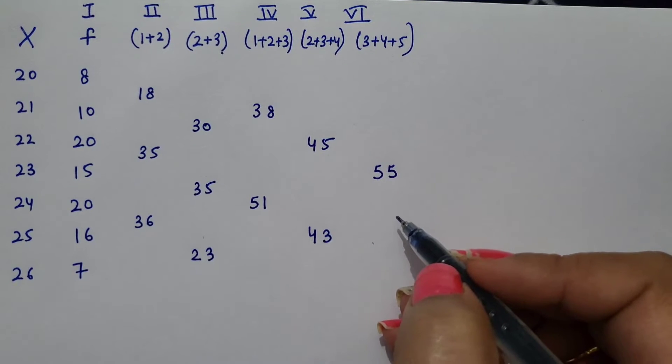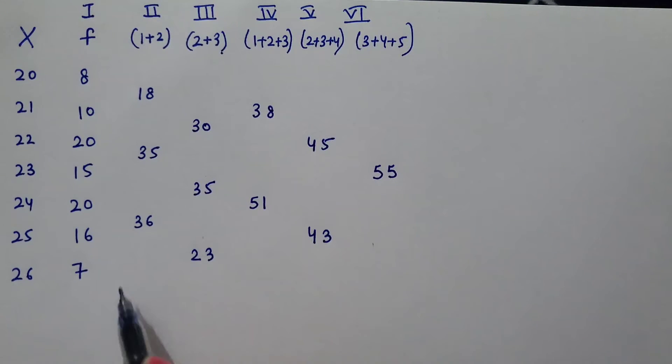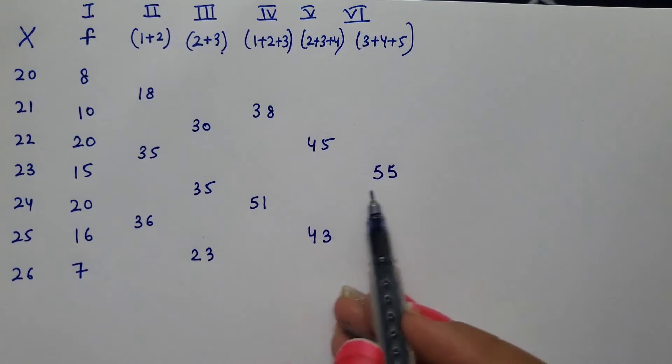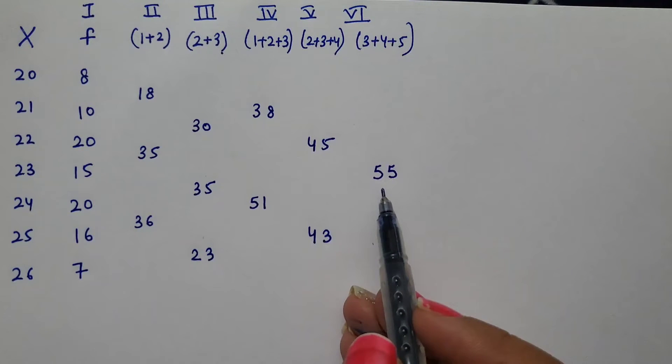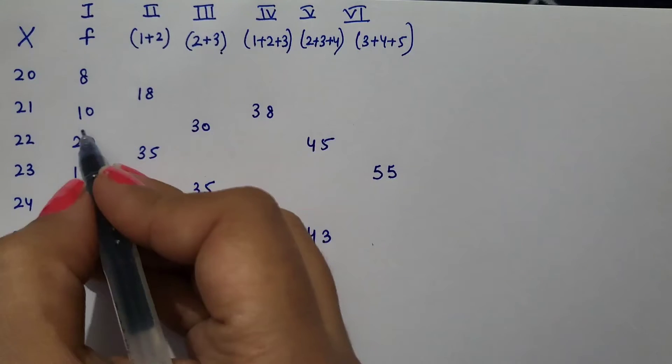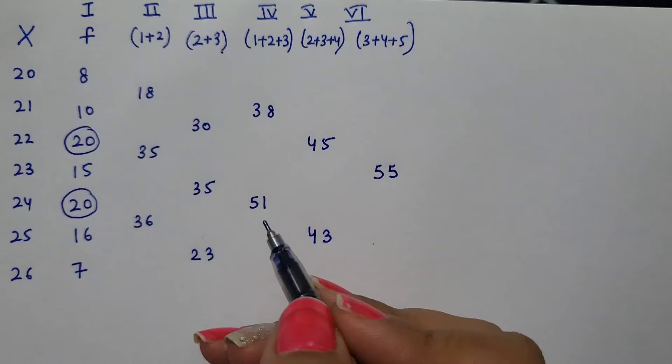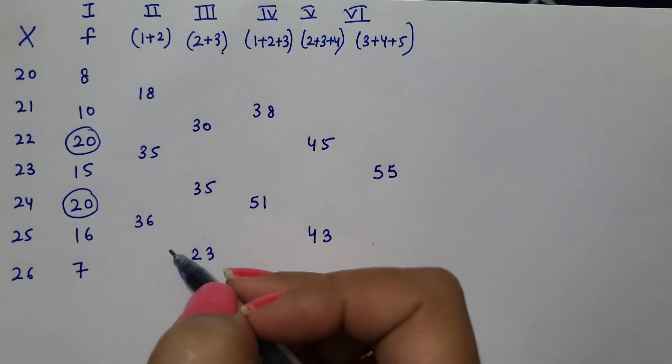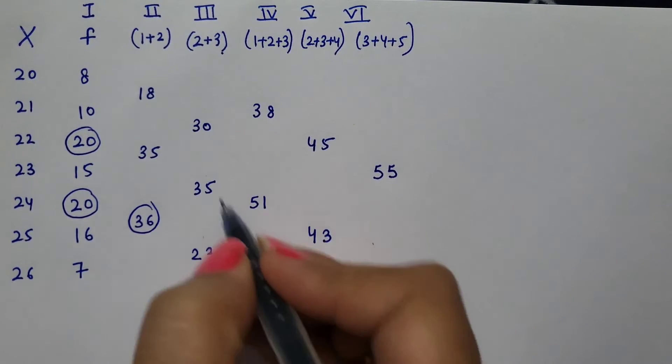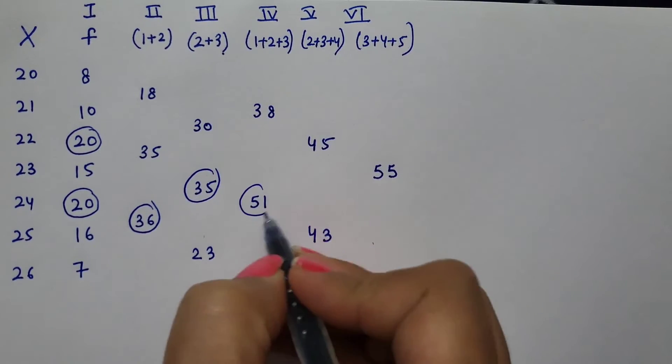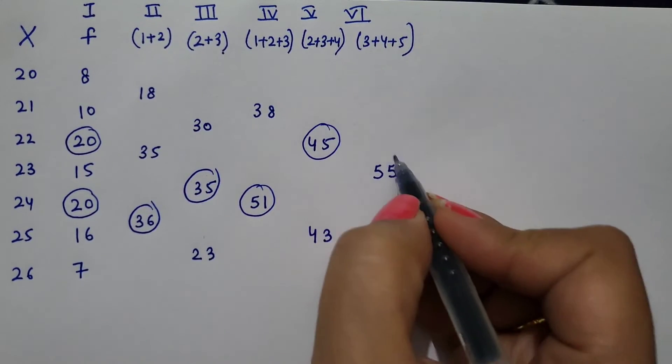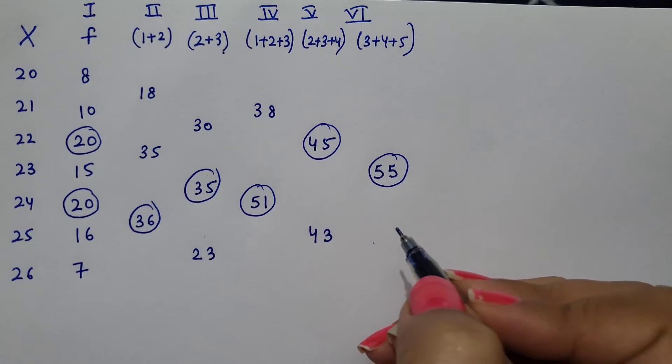This is our grouping table. Now, what do you need to do? In all the columns, the highest frequency we need to circle it. In the first column, I have two highest frequencies, so I have two circles. In the second column, the highest item is 36. Then 35, 51, 45, and 55.